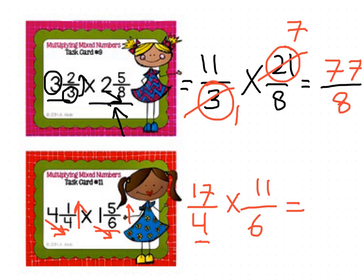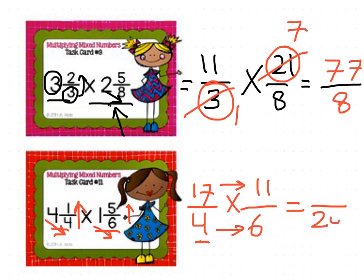17 and 4 — no, they are not divisible by the same number. 17 and 6 — no. So I have to multiply as they are: numerator by numerator, denominator by denominator. Denominator: 4 times 6 is 24. Numerator: 17 times 11 — that gives 187. So the answer is 187/24.